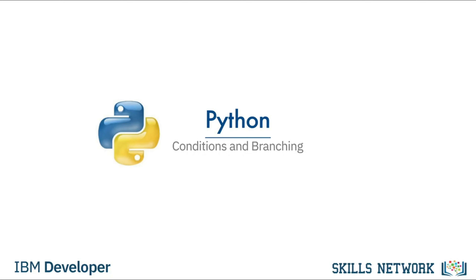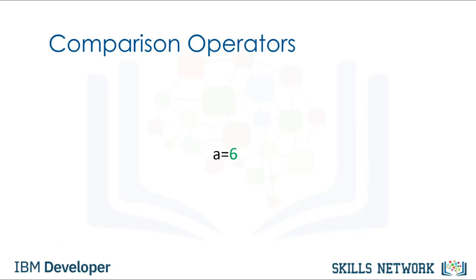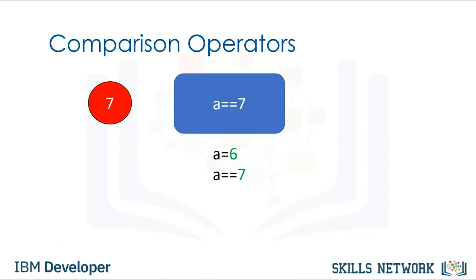In this video, you will learn about conditions and branching. Comparison operations compare some value or operand and, based on some condition, produce a boolean. Let's say we assign a value of 6 to a. We can use the equality operator — denoted with two equal signs — to determine if two values are equal. In this case, if 7 is equal to 6: since 6 is not equal to 7, the result is false. If we perform an equality test for the value 6, the two values would be equal and we would get a true.